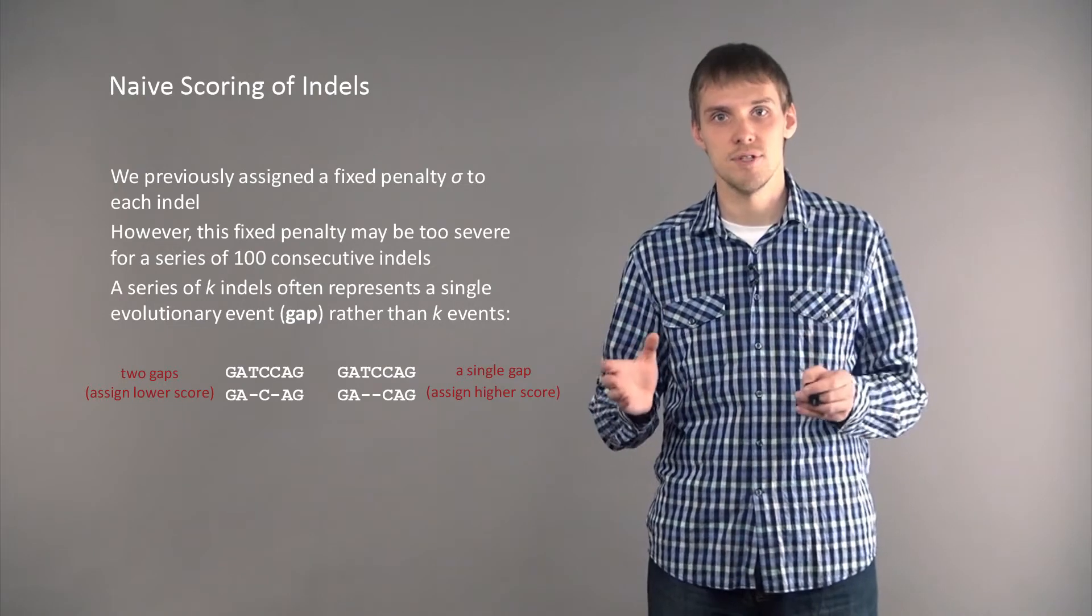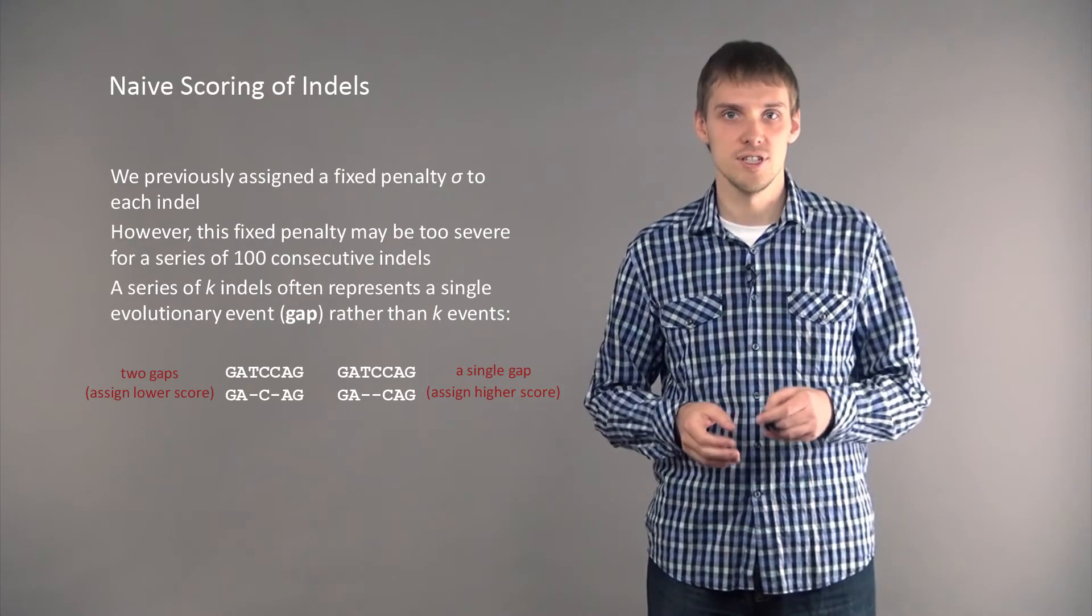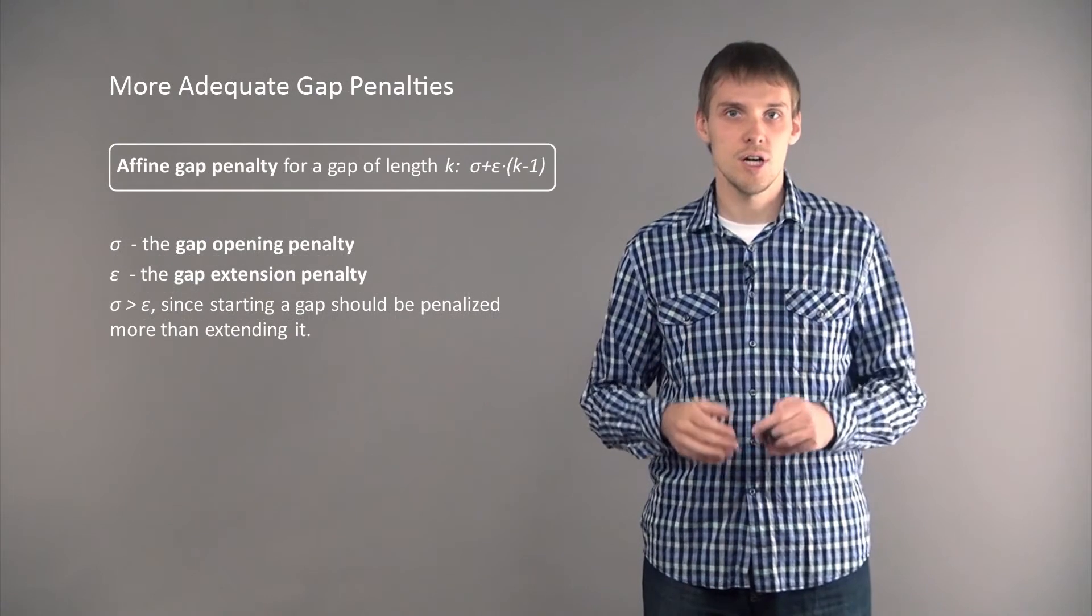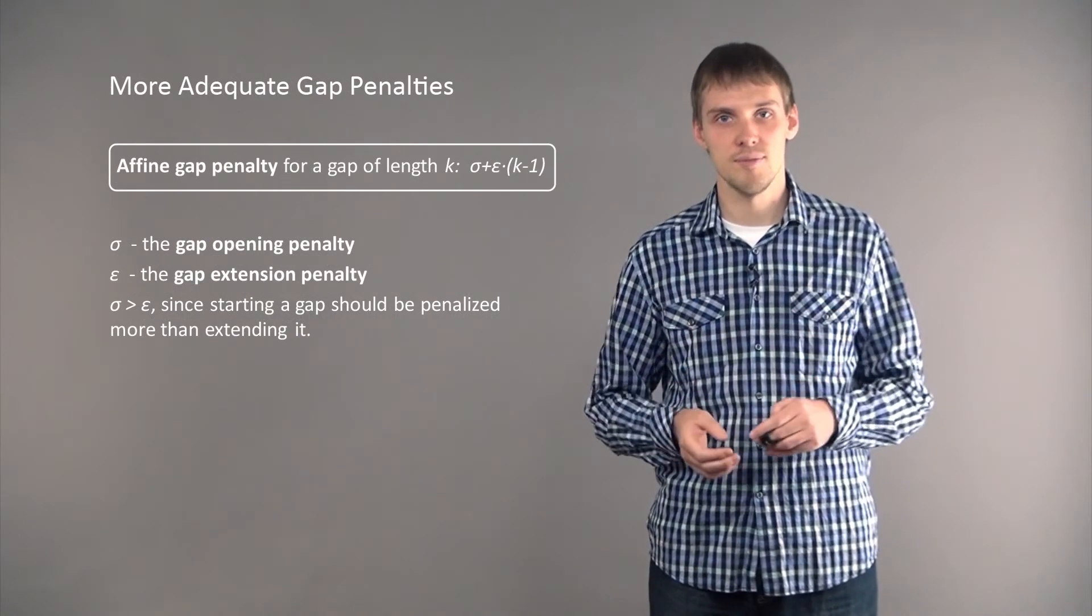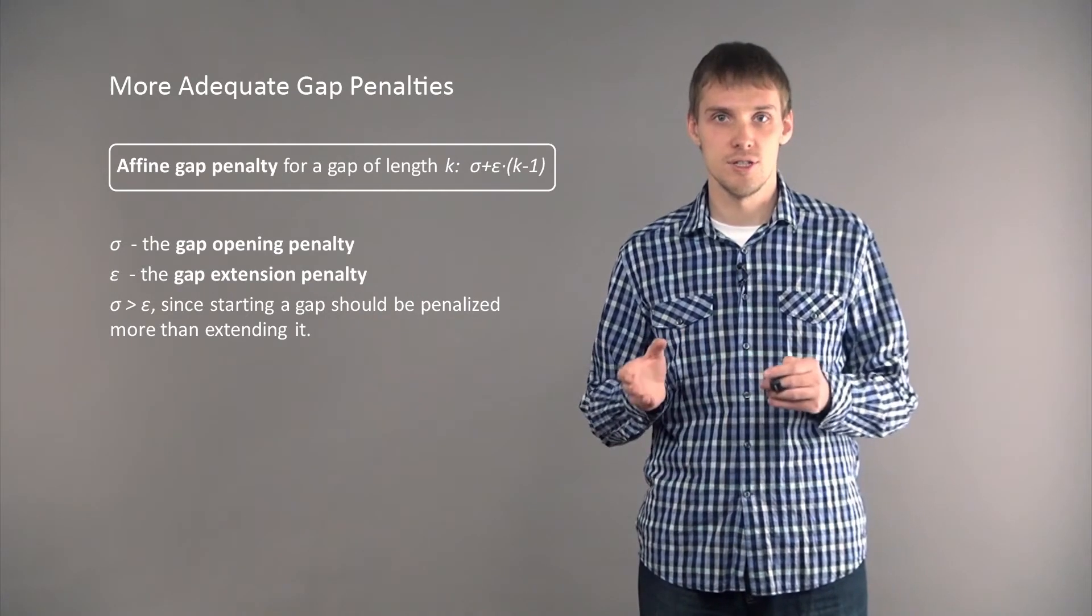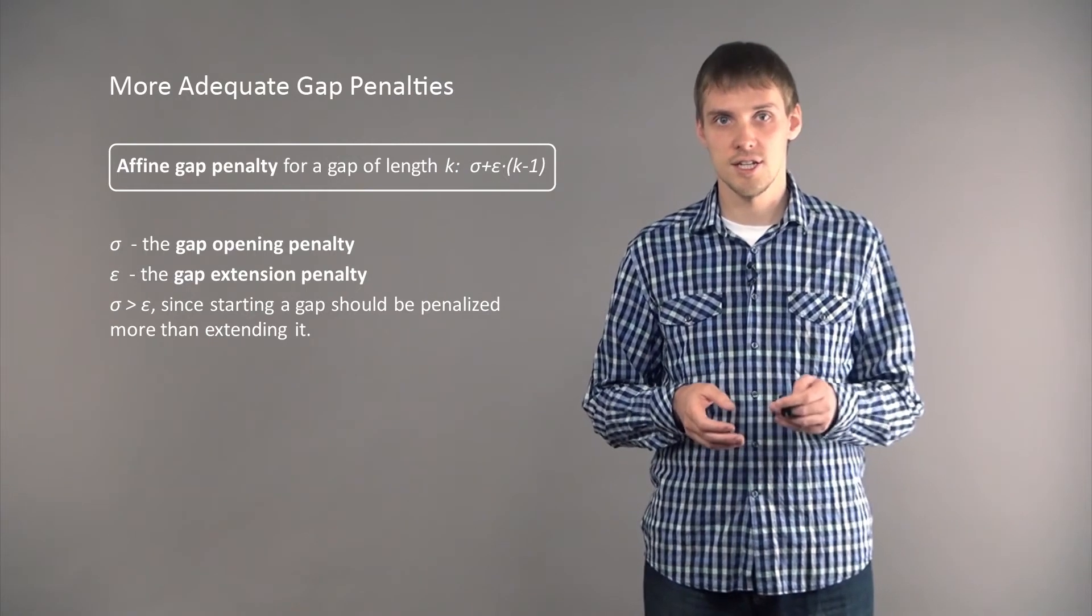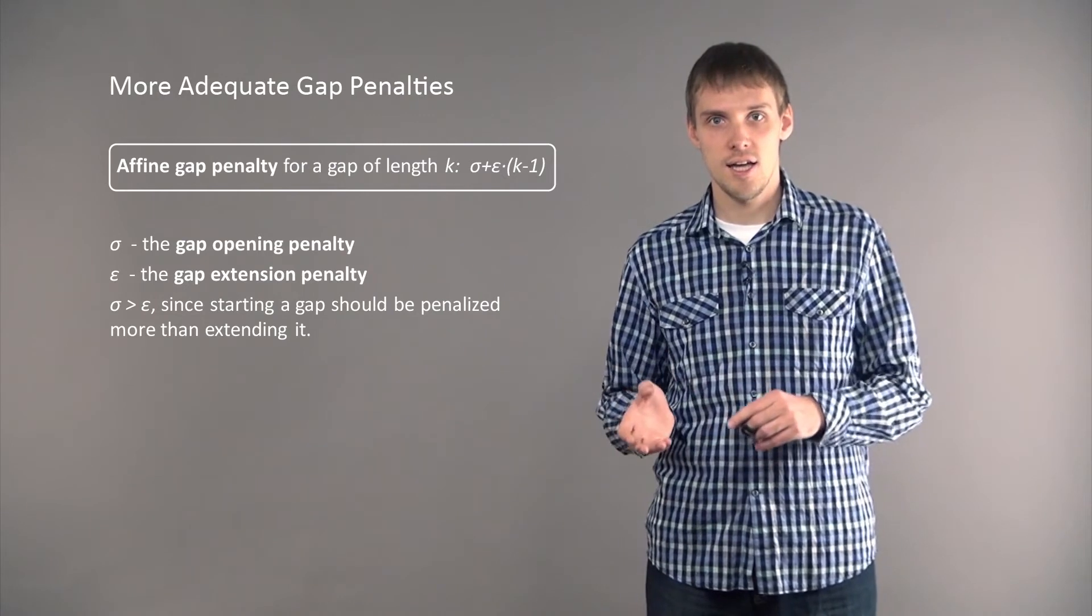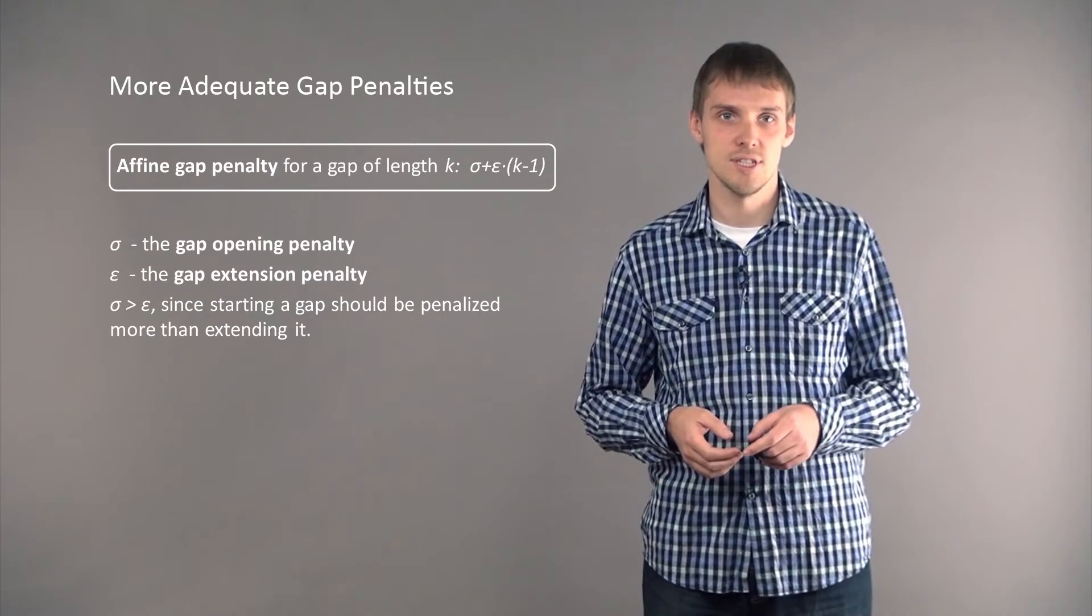We will call this sequence of k consecutive indels a single evolutionary event - a gap - rather than many evolutionary events of small insertions and deletions. To model this situation in sequence alignment algorithms, we will use affine gap penalty where we use two constants: sigma, which is the gap opening penalty, and epsilon, which is the gap extension penalty.